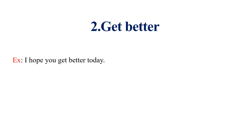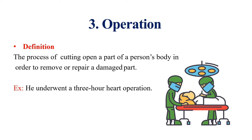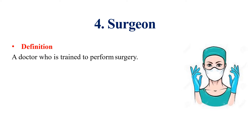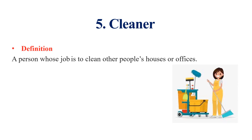Get better — I hope you get better today. This is a phrasal verb. Operation: an operation is the process of cutting open a part of a person's body in order to remove or repair a damaged part. Example: He underwent a three-hour heart operation. This word is a noun. Then I have the word 'surgeon.' A surgeon is a doctor who is trained to perform surgery. Example: Surgeons performed two operations on him yesterday. This word is a noun.